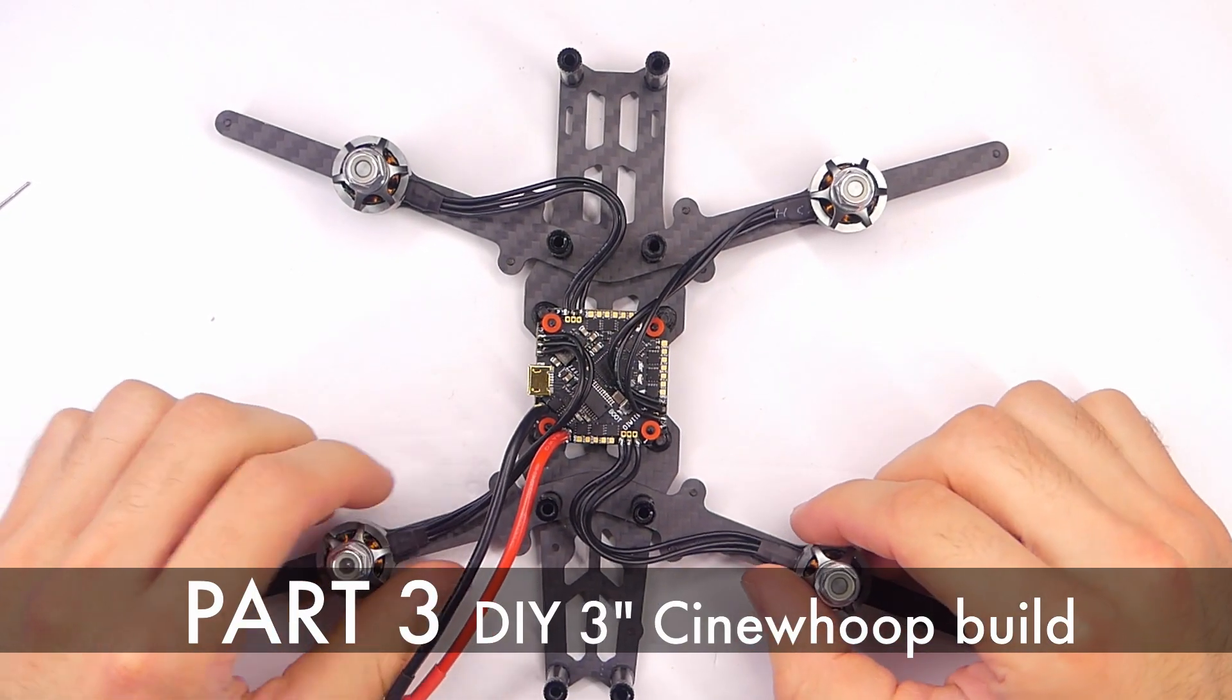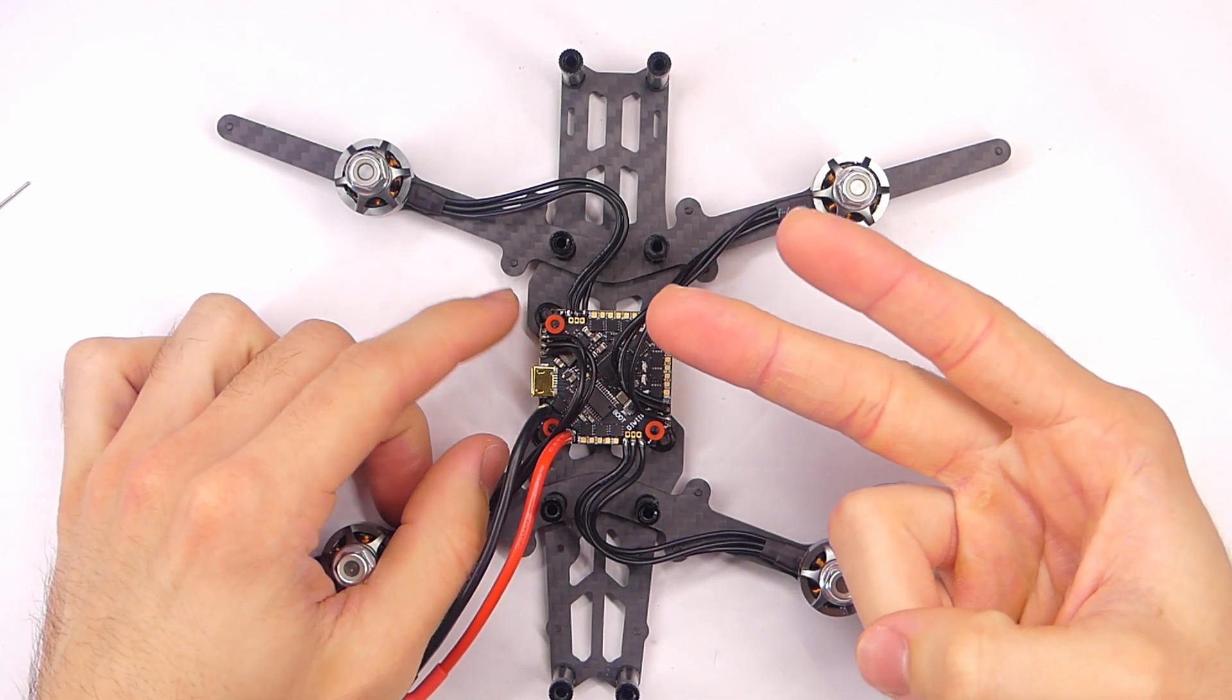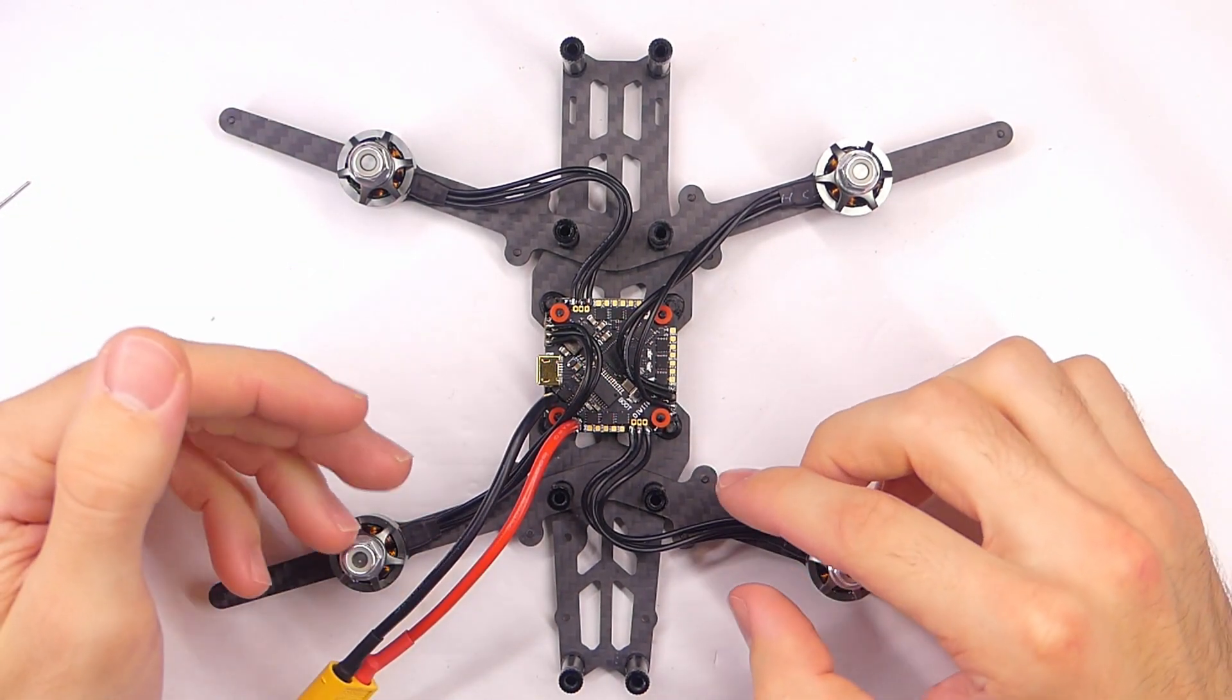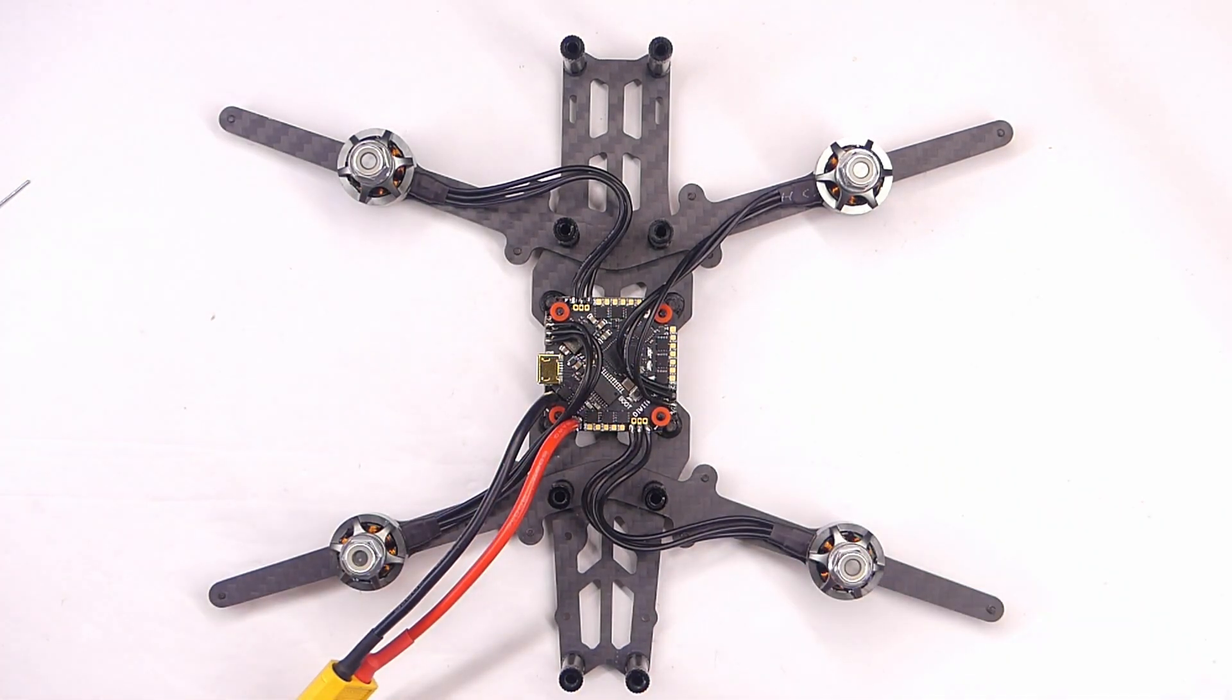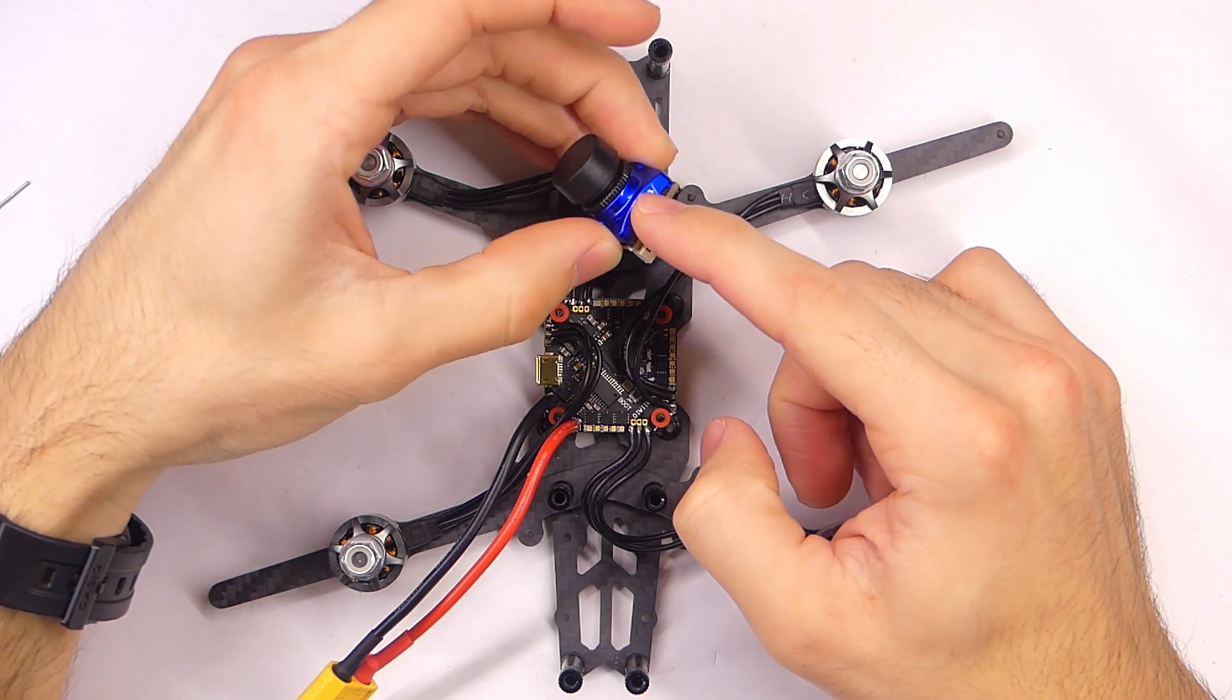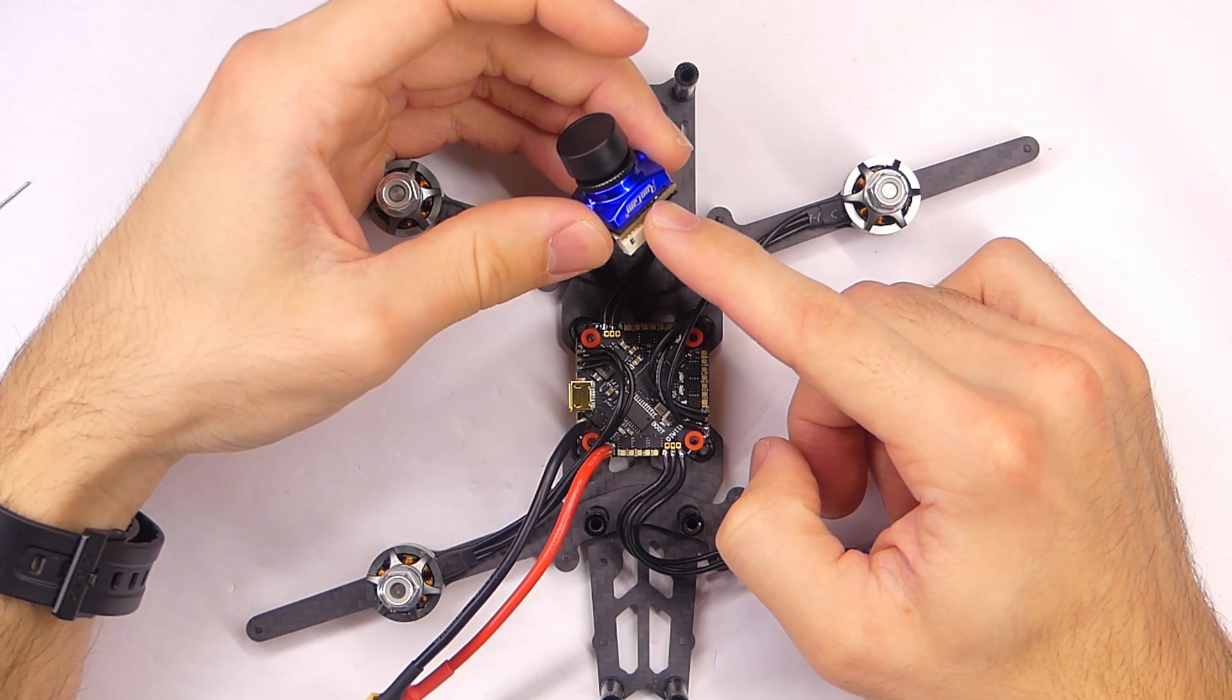So I realized I did a silly little thing because this board only has two UARTs. That means our receiver is going to connect to one of them, and I want to use the other one for smart audio for our video transmitter. And our camera is supposed to use one of the UARTs to control the camera through the transmitter, through stick commands. So I'm going to have to figure something out.